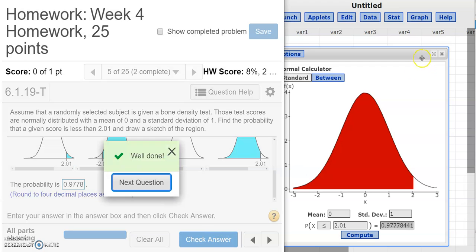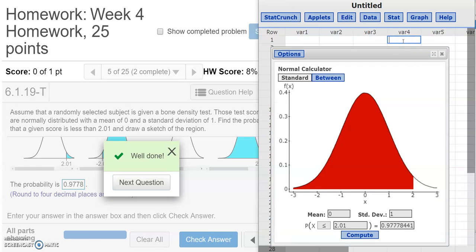So remember, there are two ways to work in StatCrunch using the normal distribution. You can either put in the value given on the horizontal axis and get the area that corresponds to it, or you can go backwards. You can put in the area you were given and then discover what the value on the axis that corresponds to it is.